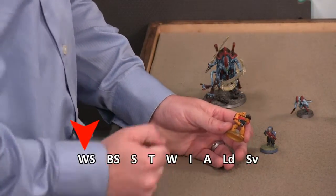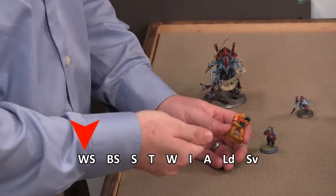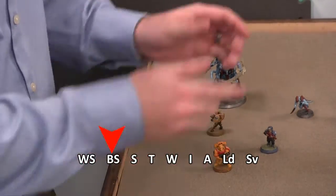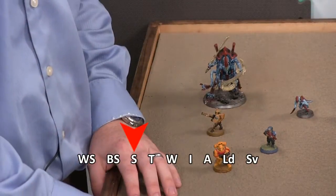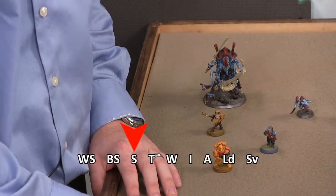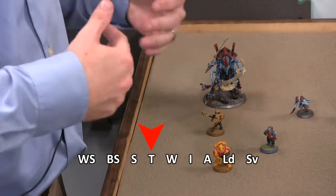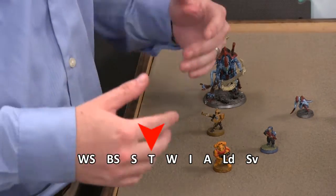Weapon skill, that's how well you punch with a fist or hit with a sword. Ballistic skill, how well can you shoot that gun? Your strength, that's the strength. Your toughness, that's how well you can take a hit. The higher your toughness, the better.